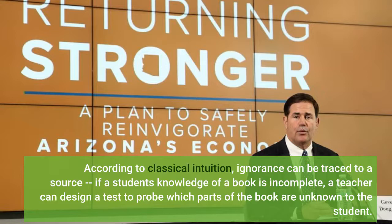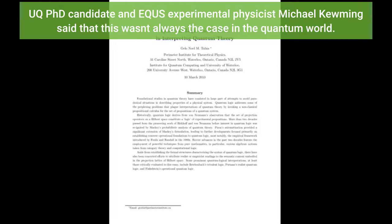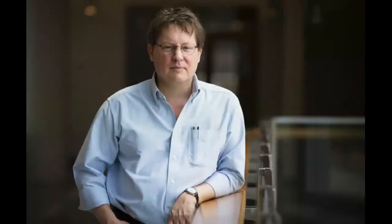According to classical intuition, ignorance can be traced to a source. If a student's knowledge of a book is incomplete, a teacher can design a test to probe which parts of the book are unknown to the student. UQ PhD candidate and experimental physicist Michael Cumming said that this wasn't always the case in the quantum world.